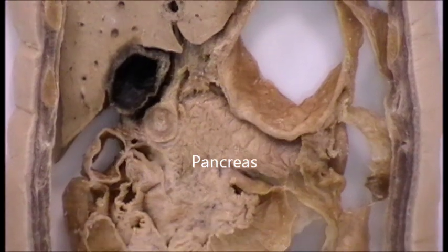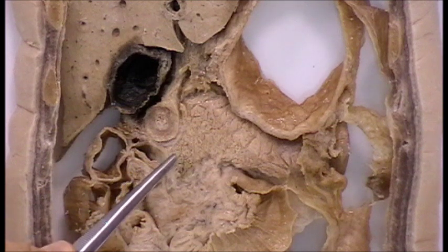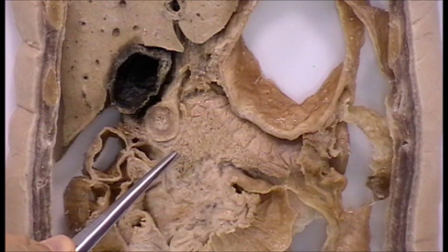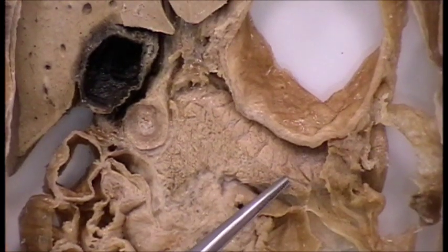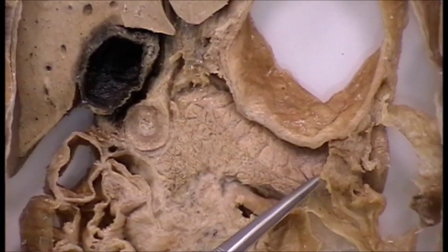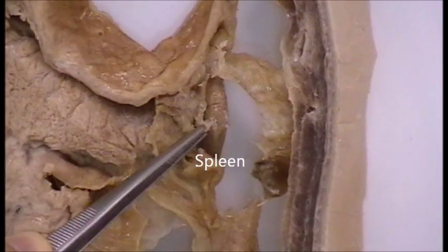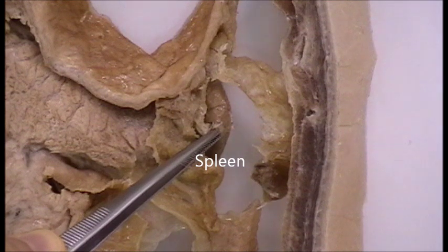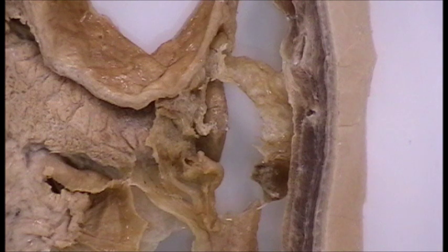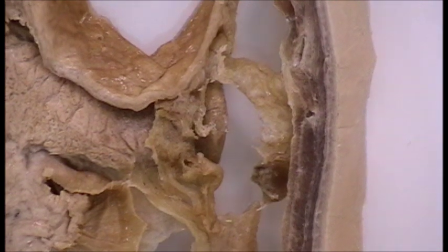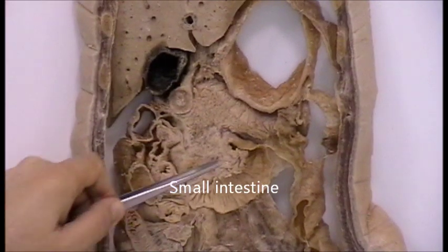Not all parts of the pancreas are visible in this section, but this is the region of the head of the pancreas and the body of the pancreas. The tail of the pancreas continues toward the hilum of the spleen. Not all of the spleen is shown in this section; we will see the spleen in the next sections.